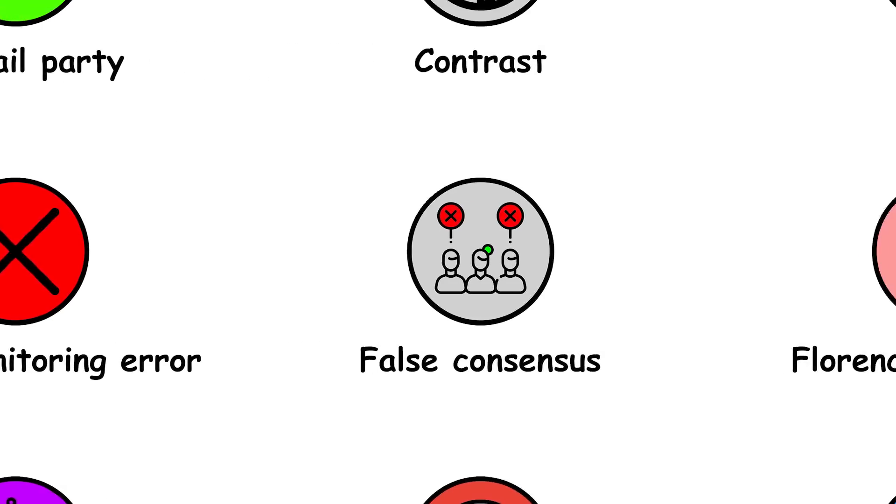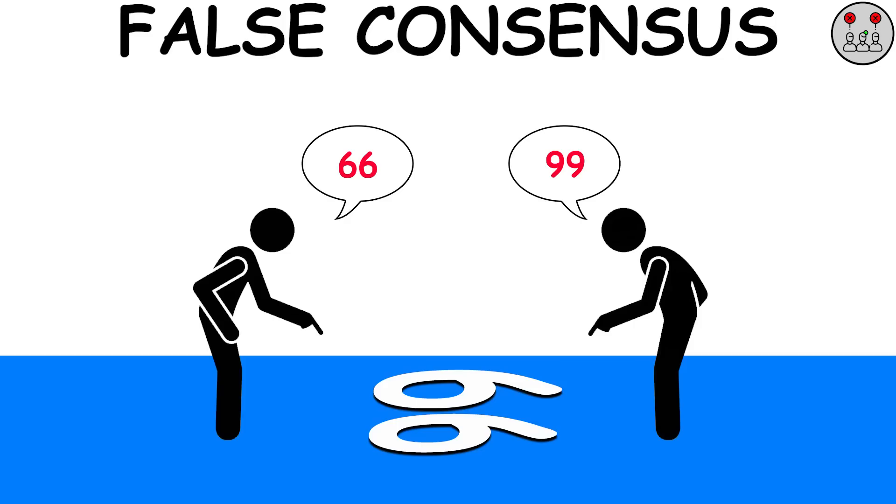False consensus effect. The false consensus effect is the tendency to assume that others think the same way as oneself.